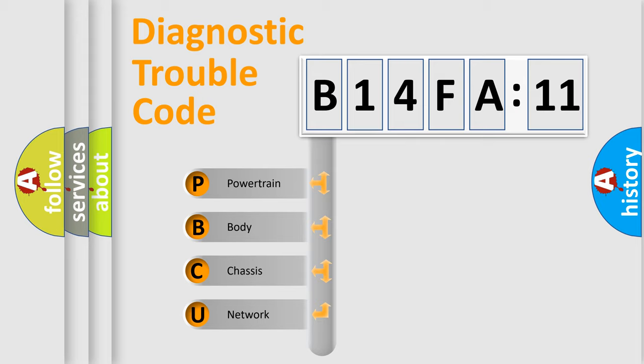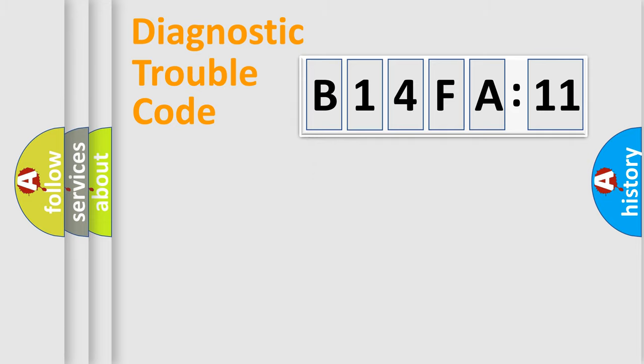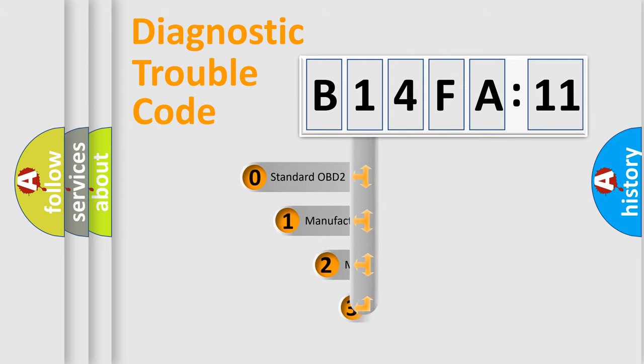We divide the electric system of automobile into four basic units: Powertrain, Body, Chassis, and Network. This distribution is defined in the first character code.